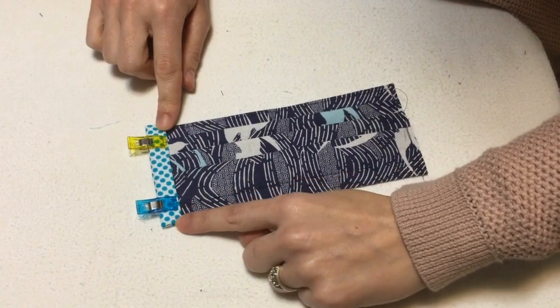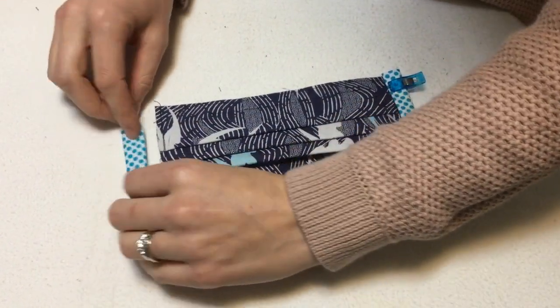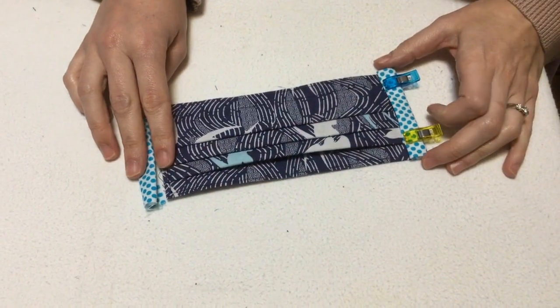Once you've done that, finally do the exact same thing to the other side of the mask and you're done sewing.